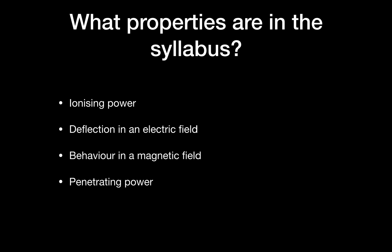So what are the properties we look at? We look at the ionizing power, the deflection in the electric field, the behavior in the magnetic field, and the penetrating power of all three types of decay. That means we'll examine these properties for alpha particles, beta particles, and gamma rays.